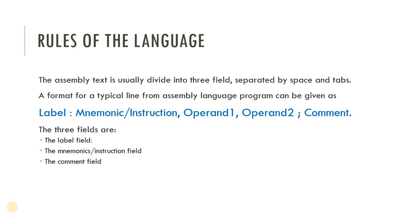Let's understand some rules of assembly language. Assembly language is usually divided into three fields separated by spaces. The format is: the first field is a label, then a colon; the second field is a mnemonic or instruction — the instruction we want to execute; then operands — on which we want to perform the operation; and the last field is a comment, separated by a semicolon.